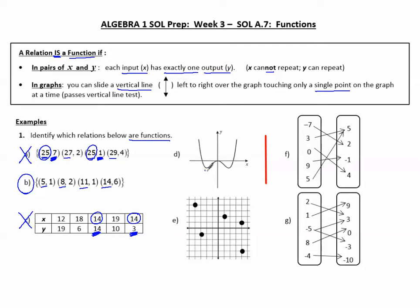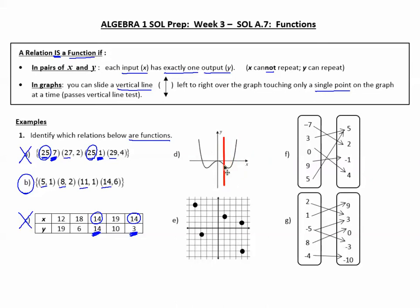In D, I'm looking at a graph, so I'm thinking about the vertical line test. Is there anywhere I can draw a vertical line that touches more than one point? The answer is no. Anywhere I pass a vertical line, only one point is crossed. So passing the vertical line test makes this relation a function.